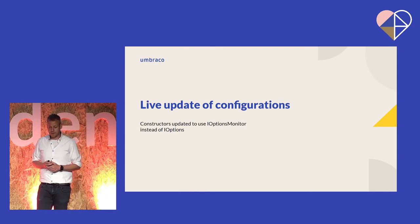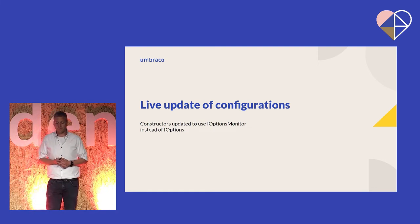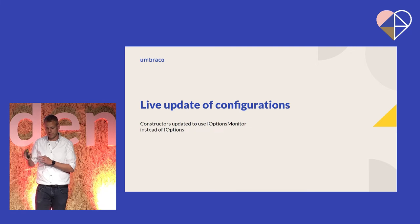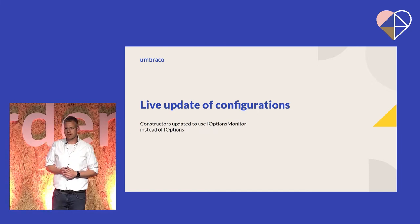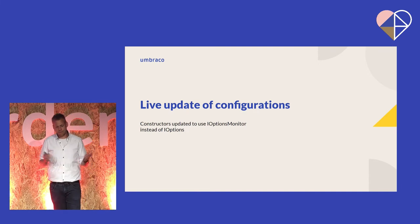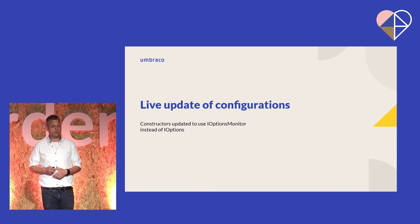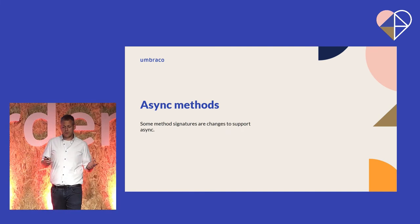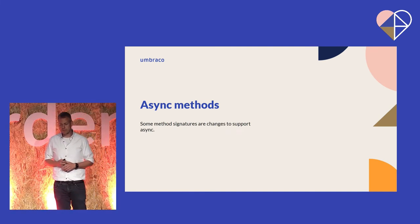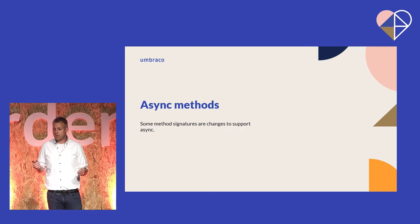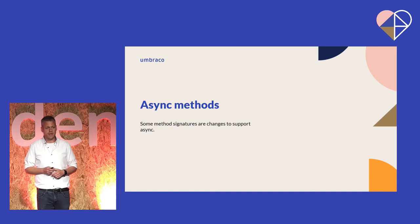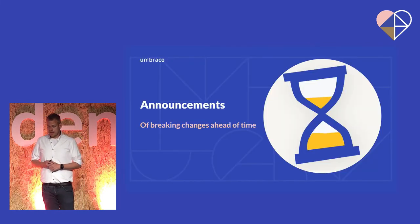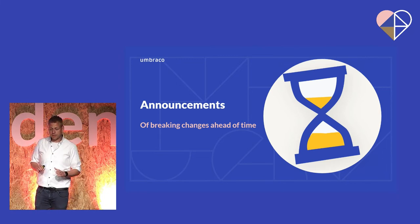We also have live update of configurations. To do this, we had to update a lot of constructors to use IOptionsMonitor instead of IOptions, which is a Microsoft thing. We don't expect you to use these constructors manually because in theory it should only be used through the service provider. But if you have unit tests or something, it is likely that you use the constructors yourself. And finally, we also changed some method signatures to be async. This is a change we want to do more of in the future because it benefits performance. From Umbraco 10, it's mainly around content finders and the abstractions we use for search.